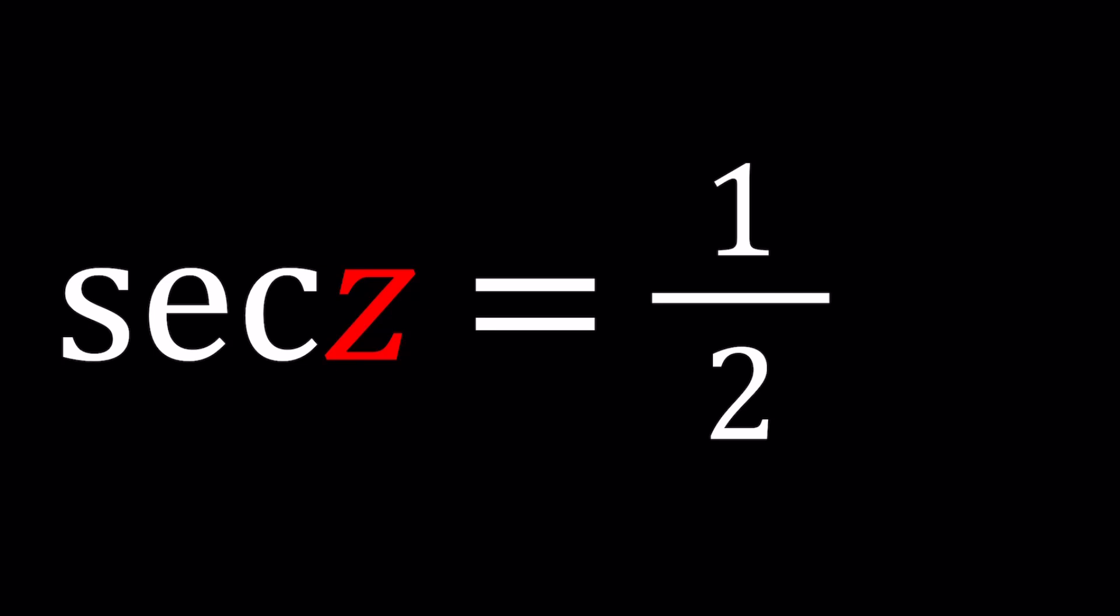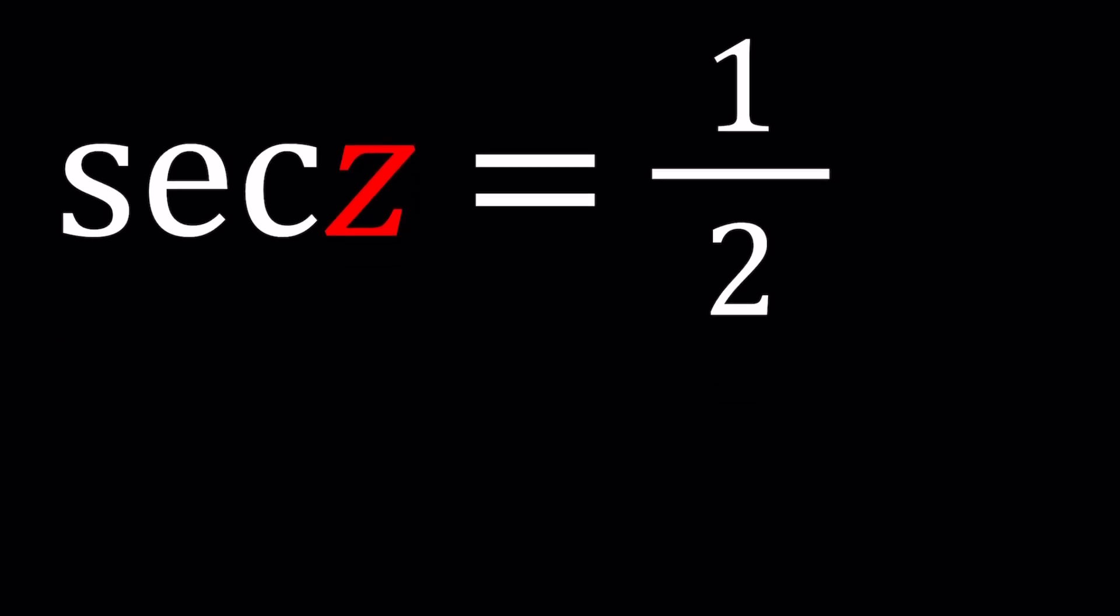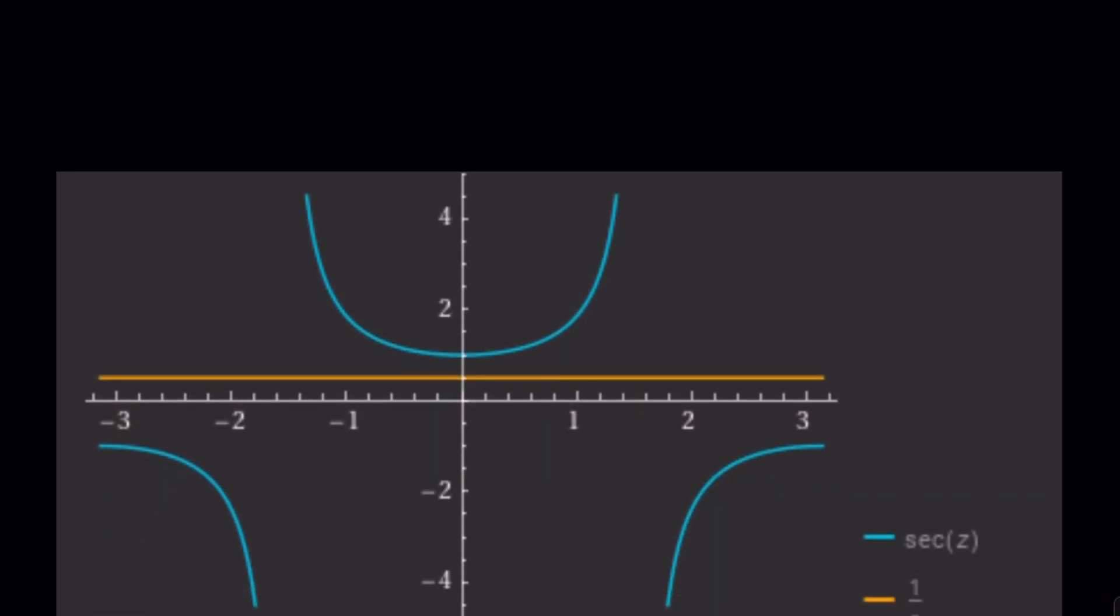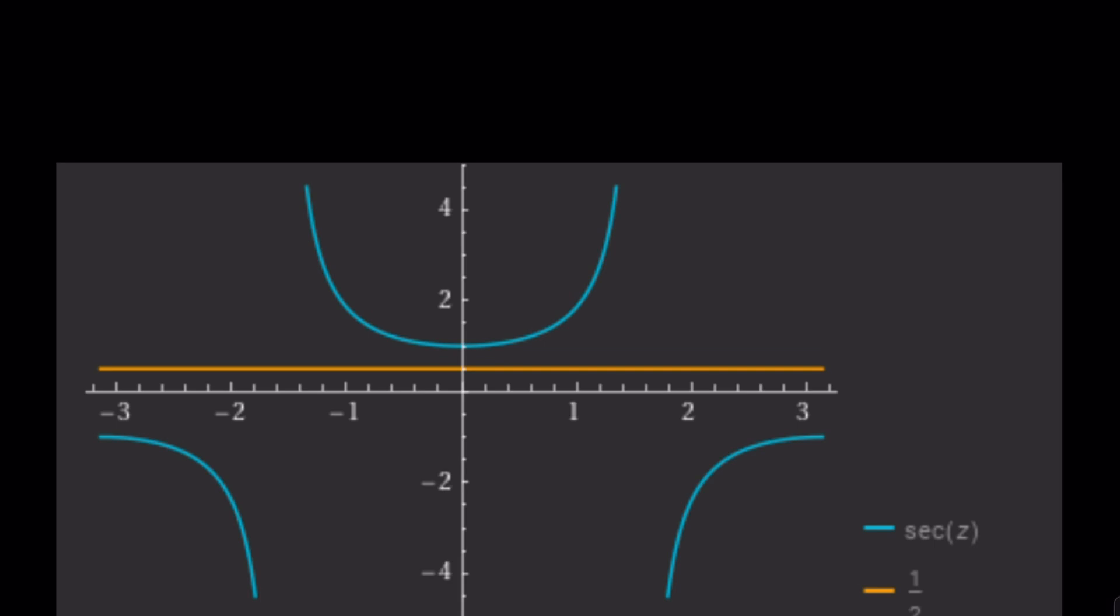But before we start solving this problem, I'm going to show you a graph that should show the solutions, in other words, the intersection points, but there are none. Why? Because there are no real solutions.